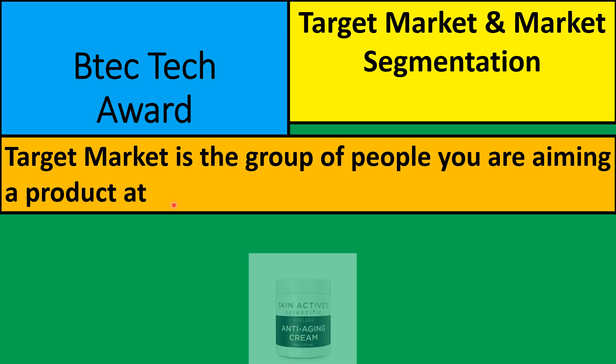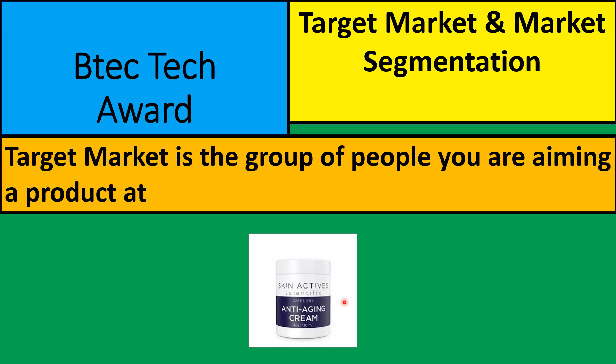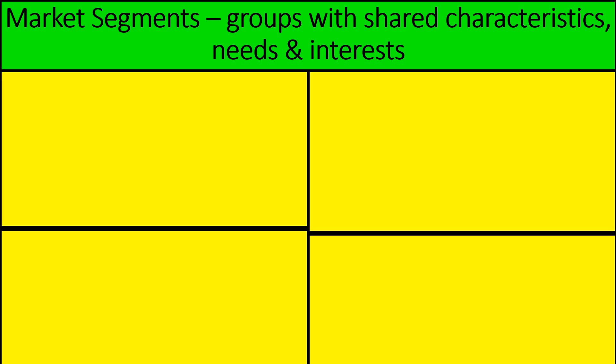As an example, consider anti-aging cream. The target market will be people who are concerned about aging — they will tend to be older people. Some people in their 20s might well buy it because they're worried about aging, but I would imagine the target market is for people over the age of 40. Target market: the group of people you're aiming a product at.